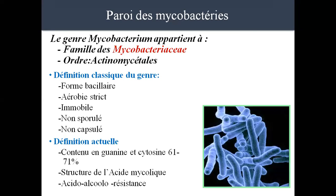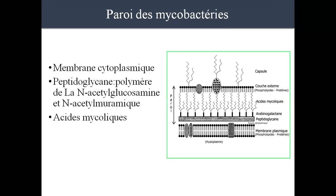C'est l'acido-alcoolo-résistance. C'est un caractère majeur de ce groupe de bactéries. Donc, cette bactérie a une caractéristique majeure. Vous voyez en bas de la diapositive ce qu'on appelle l'acido-alcoolo-résistance, qui est une caractéristique qui définit ce groupe. La définition actuelle du groupe se caractérise par l'acido-alcoolo-résistance. Cette acido-alcoolo-résistance, elle est due à la structure de sa paroi.